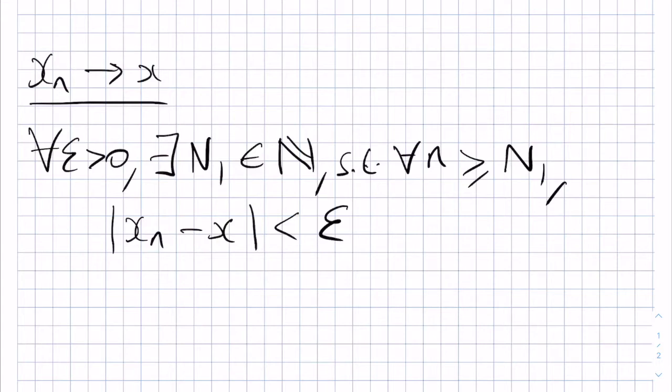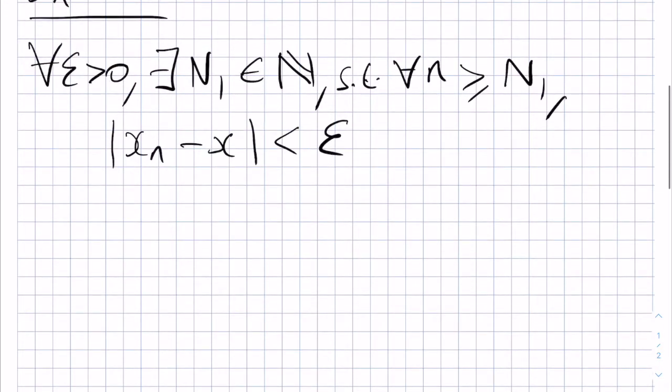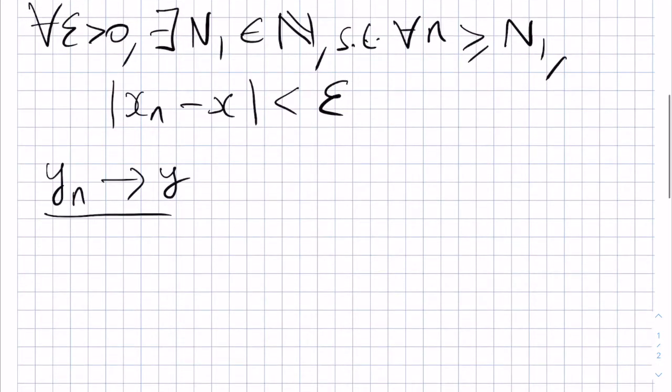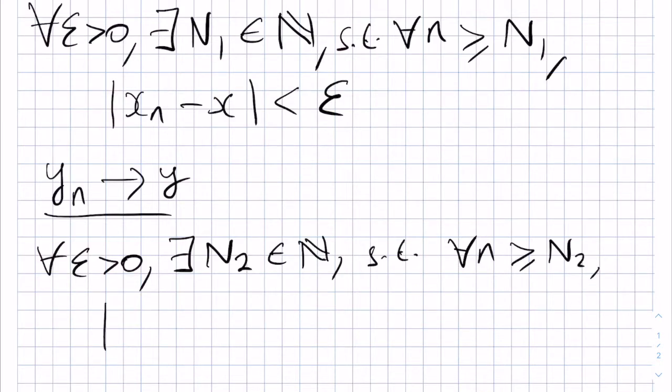The same is true for the sequence Yn, namely that since Yn tends to Y, we have the exact same thing, but this time we have an n2 as our natural number, and we replace all of the Xs by Ys.